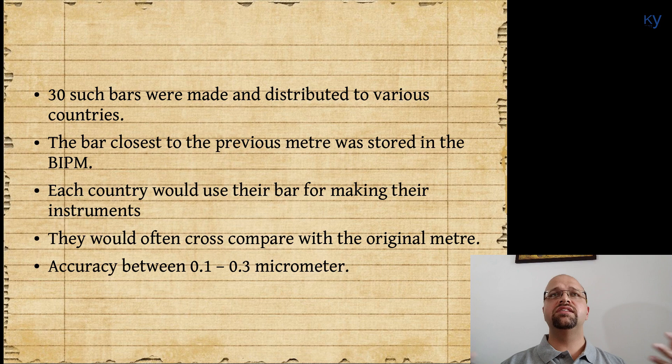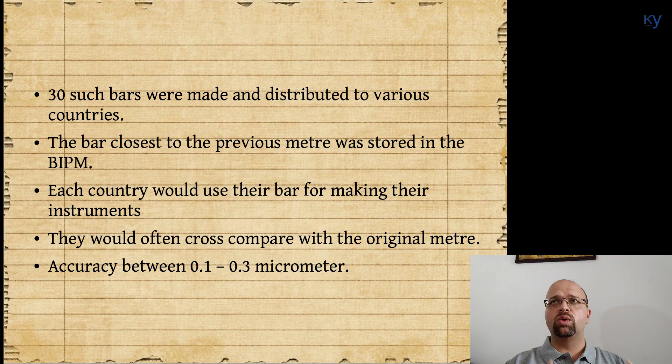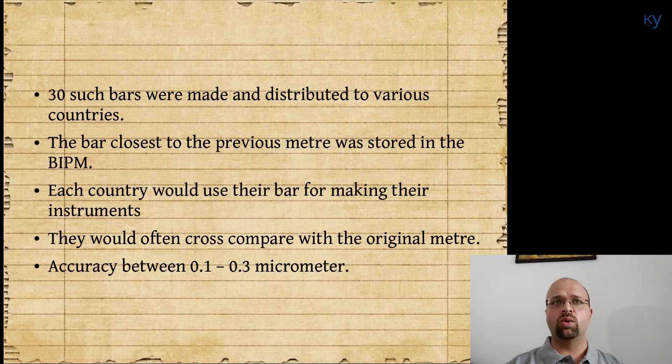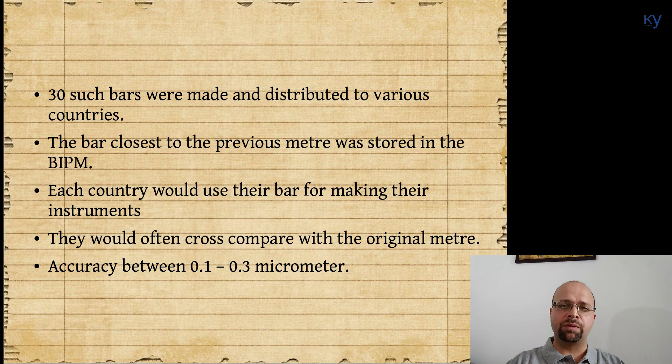What happened was that 30 such bars were made and distributed to the countries. The bar which was closest to the meter was maintained in the BIPM. Then every country would have their own bar and all the manufacturers in that country would use that bar as a reference. And every now and then, for confirmation, people would be appointed from each country, they would go to BIPM and they would check whether the agreement is still there or not.